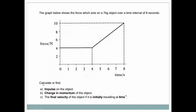We have to find impulse, change in momentum, and the final velocity of the object if the initial speed is 6 meter per second.